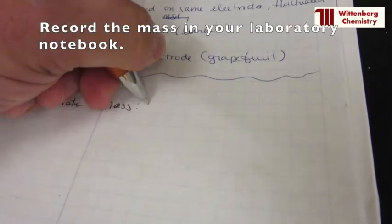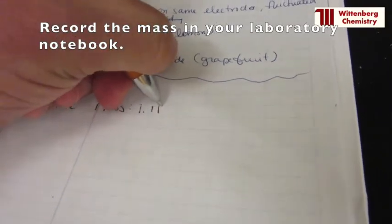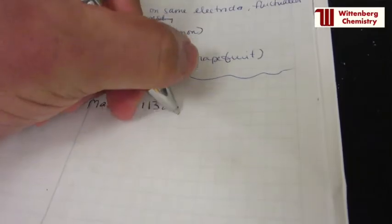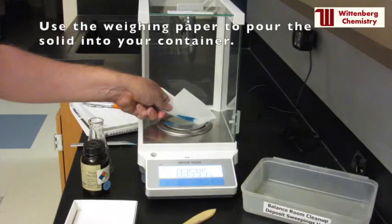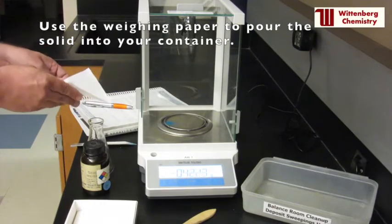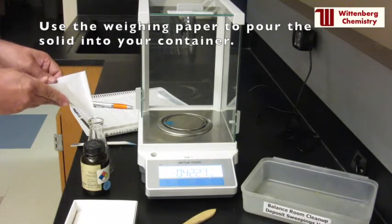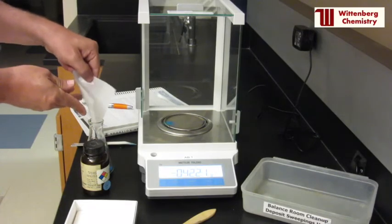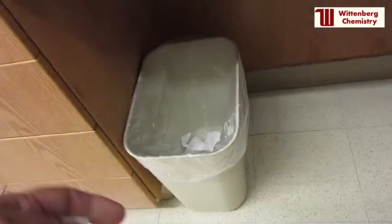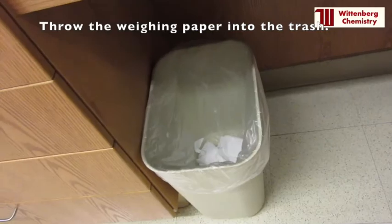Write the final mass in your laboratory notebook. Use the weighing paper to pour the solid into your flask or beaker. Throw the used weighing paper into a trash can.